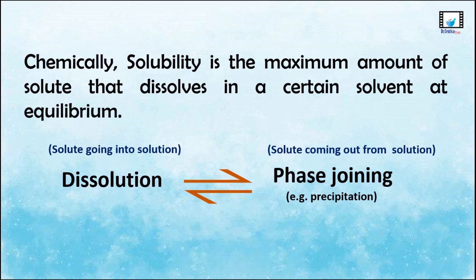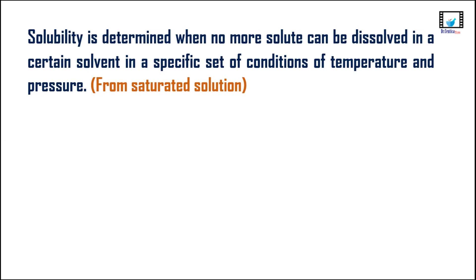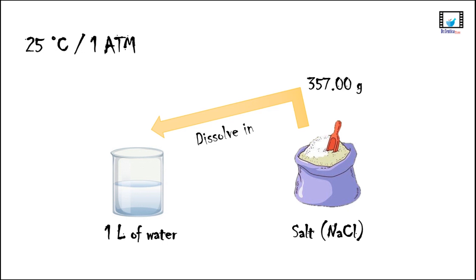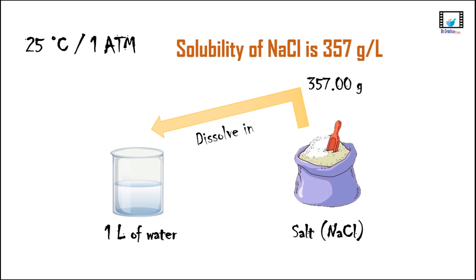To put it in simpler words, solubility is determined when no more solid can be dissolved in a certain solvent under a specific set of conditions of temperature and pressure. For example, if you take one liter of water and start dissolving NaCl at 25 degrees centigrade and one atmospheric pressure, you should be able to dissolve exactly 357 grams. If you add any more salt, it won't dissolve and will stay at the bottom. So the solubility of NaCl is 357 grams per liter at 25°C and one atmospheric pressure.